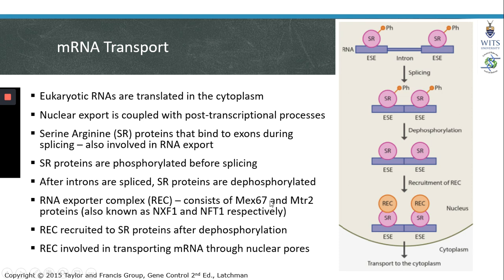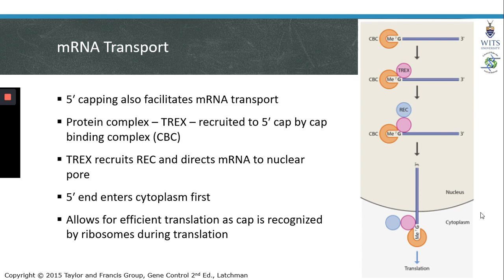The RNA exporter complex consists of two proteins: MEX67 and MTR2, which may also be known as NXF1 and NXT1 respectively. After dephosphorylation, the REC complex is recruited to SR proteins, and it is the REC complex that is involved in transporting or directing an mRNA out of the nucleus through the nuclear pore and into the cytoplasm.